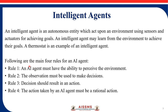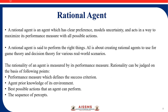Following are the main four rules for an AI agent. Rule 1: An AI agent must have the ability to perceive the environment. Rule 2: The observation must be used to make decisions. Rule 3: The decision should result in an action. Rule 4: The action taken by an AI agent must be a rational action.